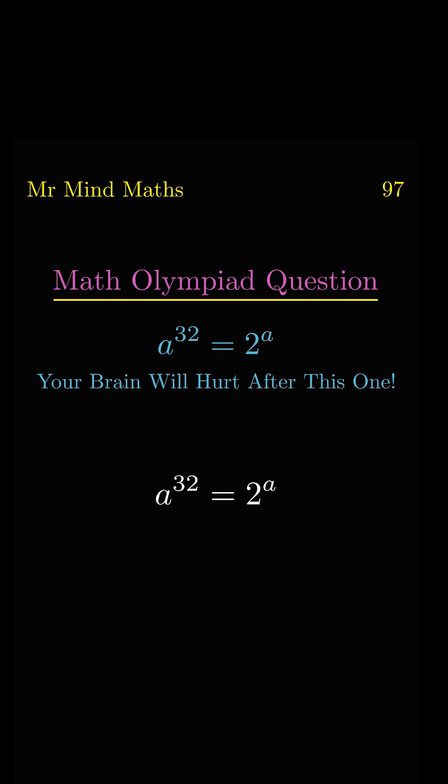First, we will take the 1/a power on both sides, so that on the right side, a and 1/a will get cancelled.